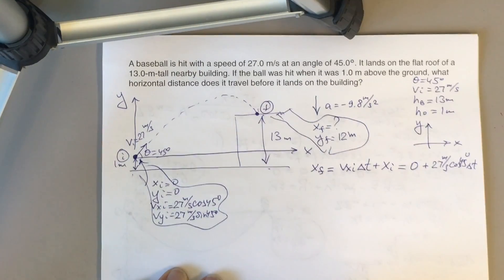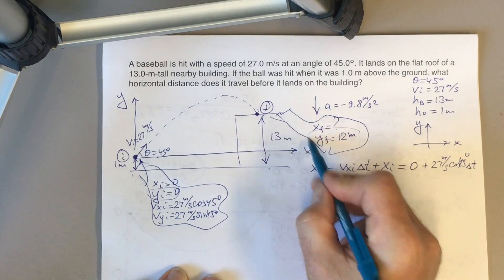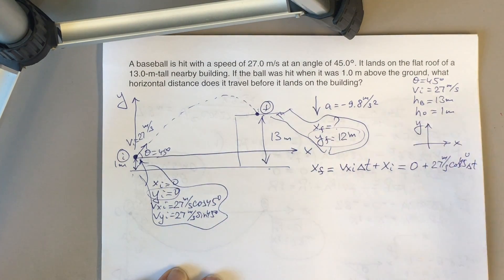Now, how to find delta t? Look what you have. You have y-initial and y-final. And you can use the equation for y to find delta t.